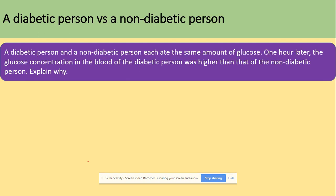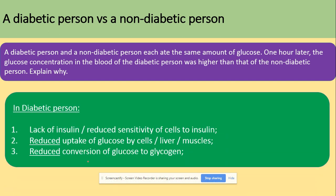A typical question compares a diabetic and a non-diabetic person who each consume the same amount of glucose. One hour later, the blood glucose concentration of the diabetic person is higher. In a diabetic person there is no insulin, or there is reduced sensitivity of cells to insulin because receptor proteins are abnormal or reduced. This leads to reduced uptake of glucose by liver cells, reduced facilitated diffusion, and hence reduced conversion of glucose to glycogen.